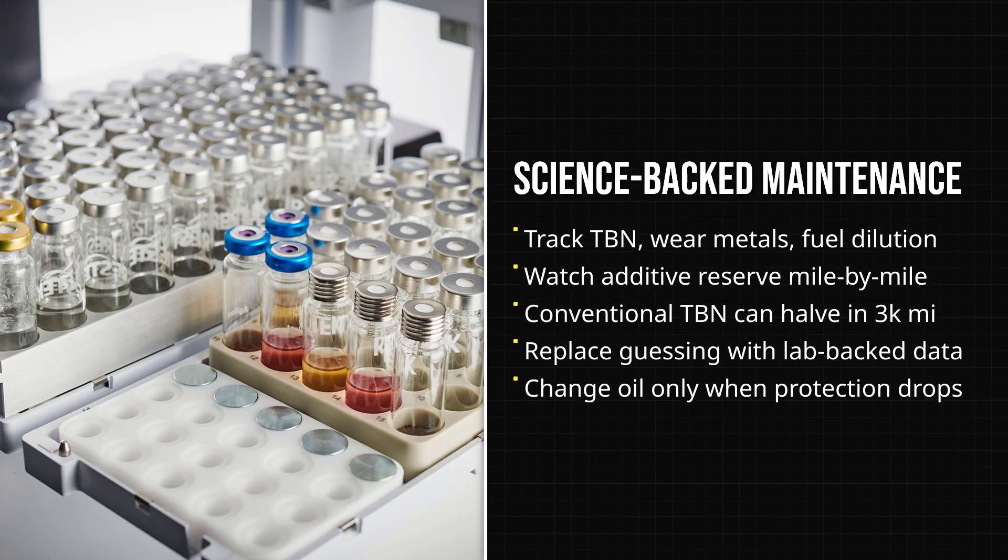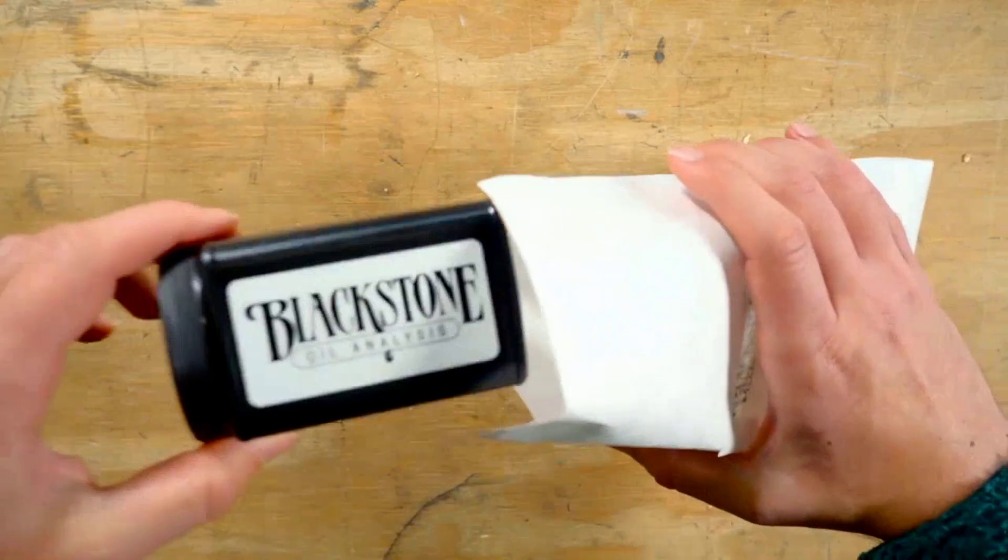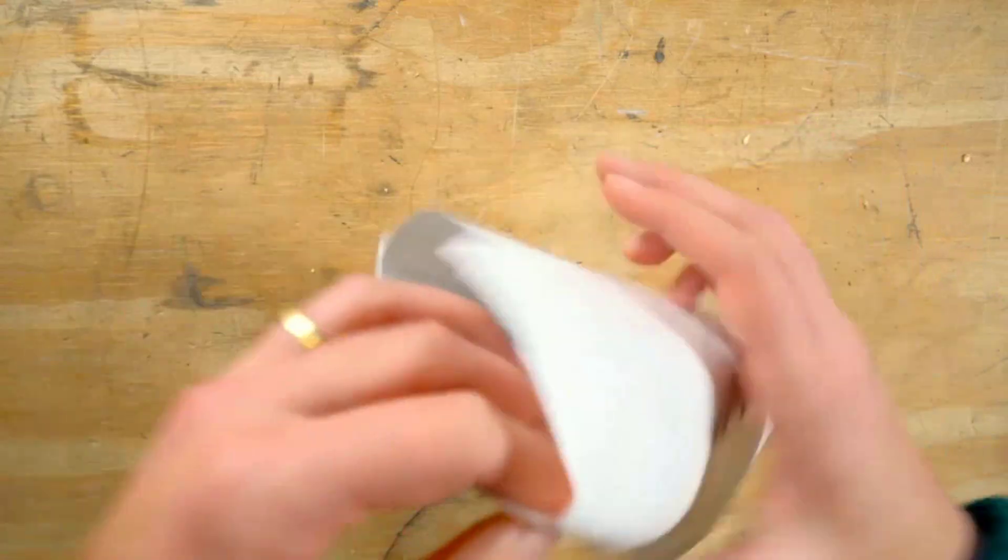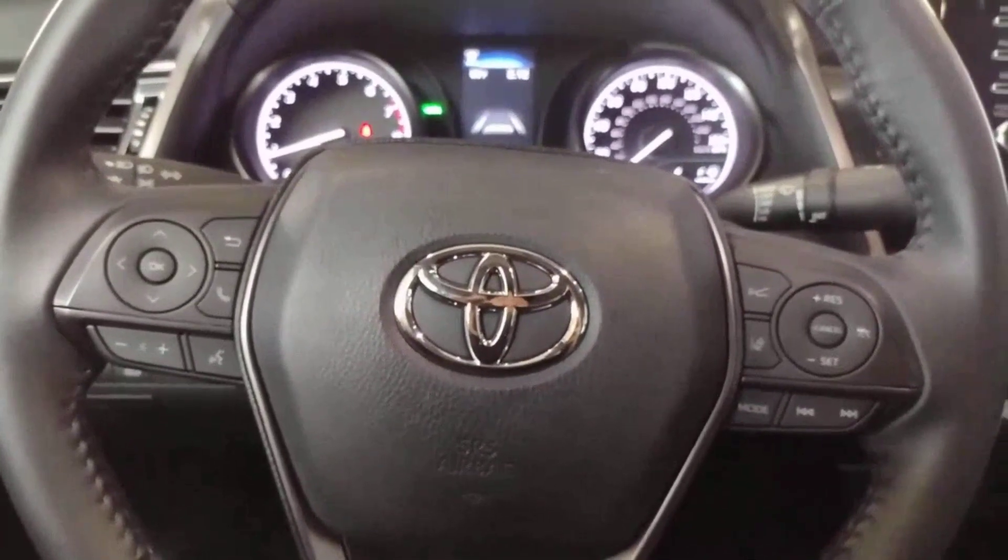Used oil analysis, often called UOA, goes deeper. It checks not just total base number, but also wear metals, fuel dilution, and how well detergents and dispersants are holding up. By sending in a small oil sample, drivers can see exactly when their oil protection is running out instead of guessing or relying on dashboard reminders.